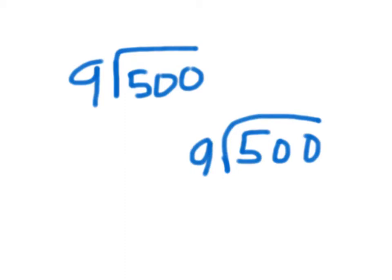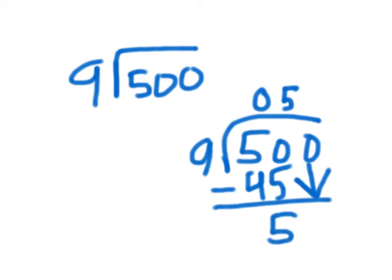Then you'd see if 9 goes into 5, which it doesn't, so you put a 0. And then if 9 goes into 50, which it does 5 times. So you would subtract 45. Then you have to bring down your 0,